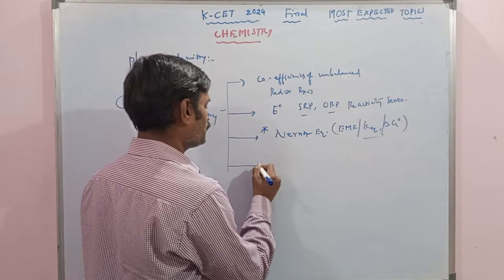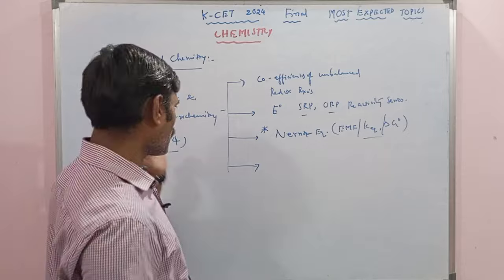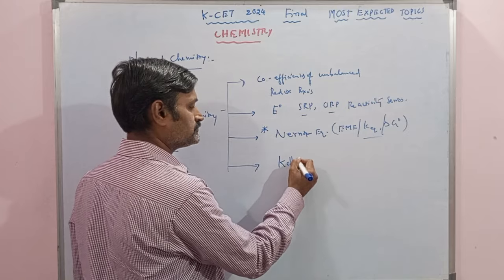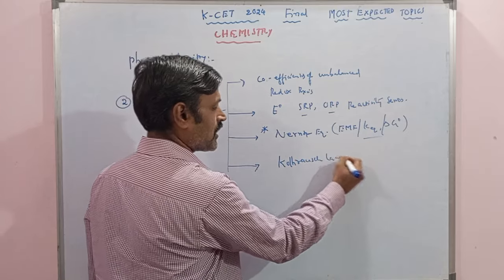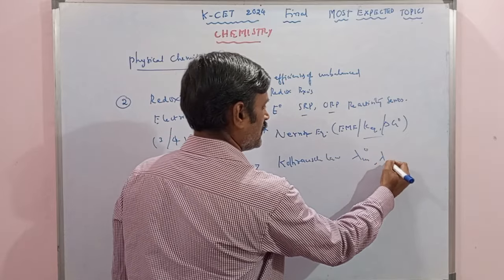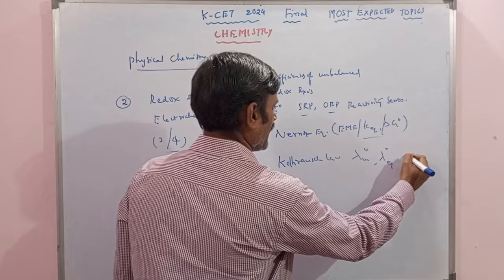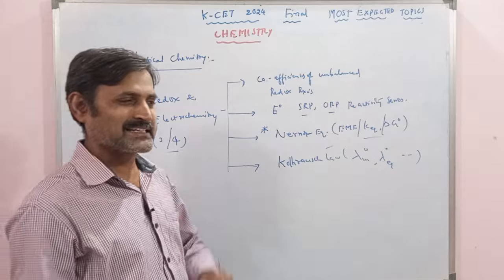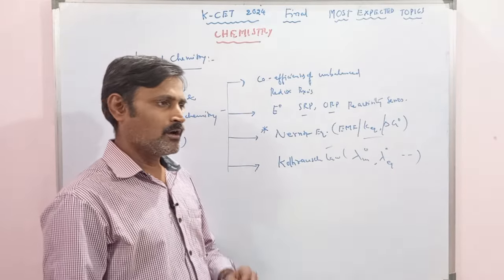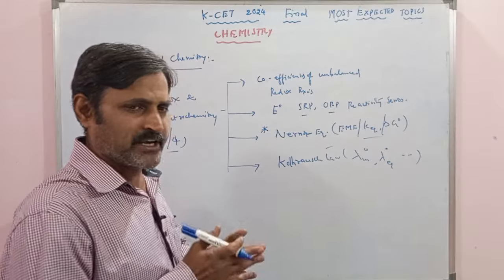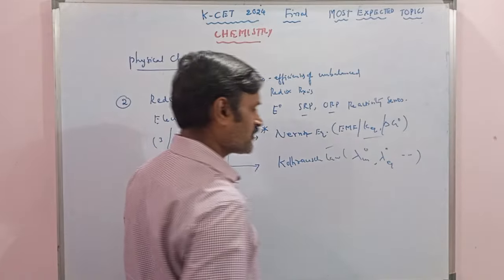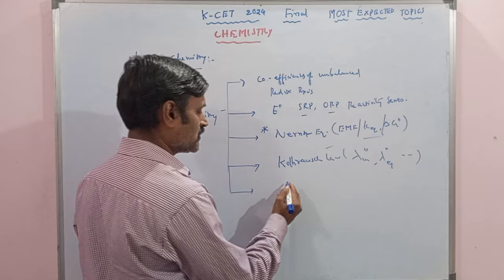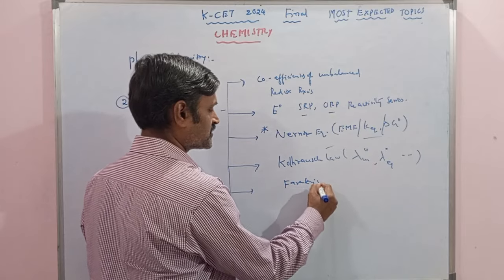If they ask one more question by neglecting any one of these concepts, that is Kohlrausch's law. Kohlrausch's law related — λ_M⁰, equivalent conductivity at infinite dilution — they are going to ask for weak electrolytes like acetic acid or ammonium hydroxide, determined using the Debye-Hückel-Onsager equation. Next, the most important one is Faraday's laws related problems.